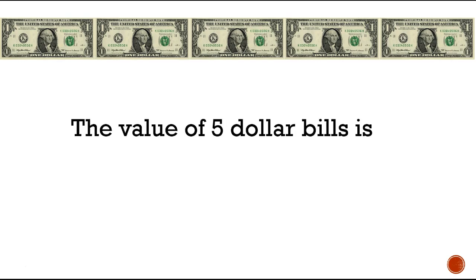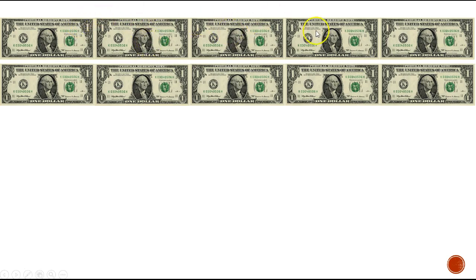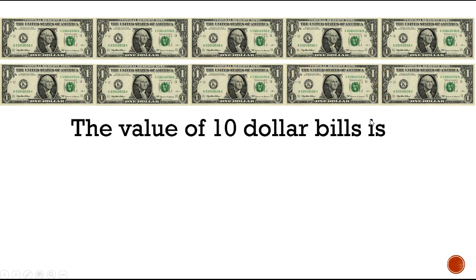We counted all the way to 100 — good job! I have one, two, three, four, five dollar bills here. There are five one-dollar bills. What is the value of five one-dollar bills? Did you say five dollars? If you did, give yourself a kiss on the brain! Now I have — let's count — one, two, three, four, five, six, seven, eight, nine, ten. I have ten one-dollar bills. What is the value of ten one-dollar bills?